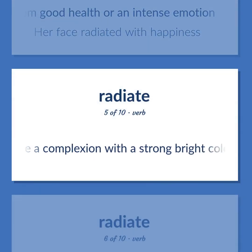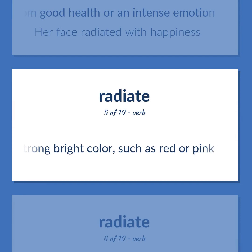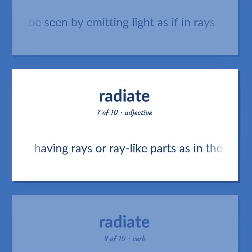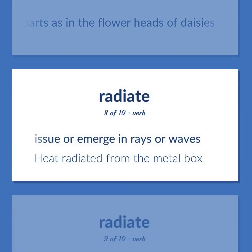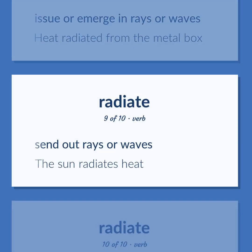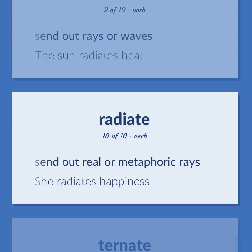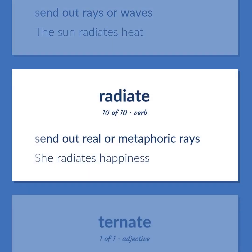Radiate: Have a complexion with a strong bright color, such as red or pink. Cause to be seen by emitting light as if in rays. Having rays or ray-like parts, as in the flower heads of daisies. Issue or emerge in rays or waves — heat radiated from the metal box. Send out rays or waves — the sun radiates heat. Send out real or metaphoric rays — she radiates happiness.